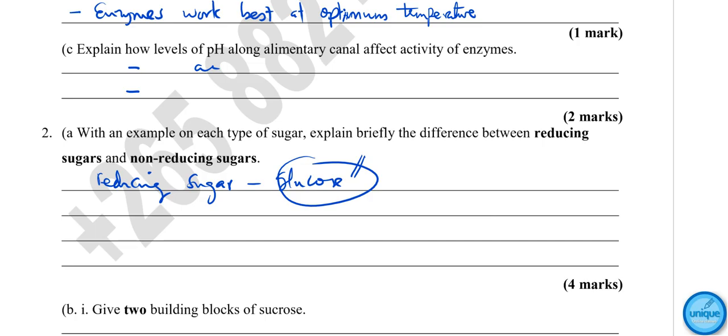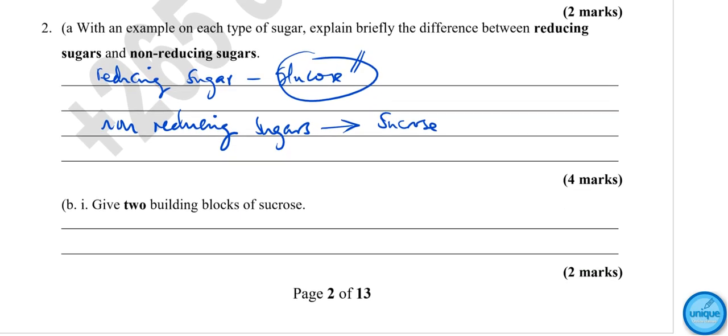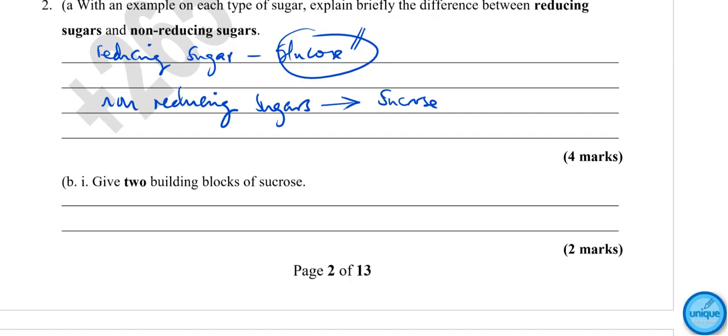Whereas non-reducing sugars are sugars that do not have an aldehyde functional group. Examples of non-reducing sugars are sucrose. The building blocks of sucrose are glucose and fructose.